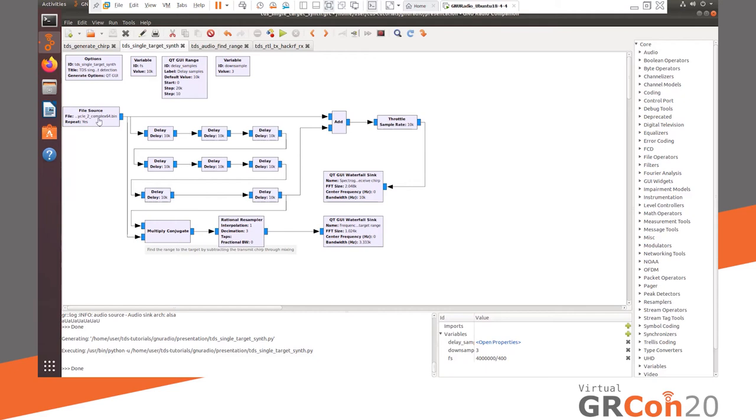In the last demo, we created a chirp using GNU Radio blocks, but we also have the option of loading a chirp from a file. In this demo of calculating the range to a single target, we simulate that target by using a series of delay lines to simulate the distance to that target. Then we compute the range frequency through a multiplication, a complex conjugate of the transmitted chirp. We display both the received and transmitted chirp here, and then the actual range frequency.